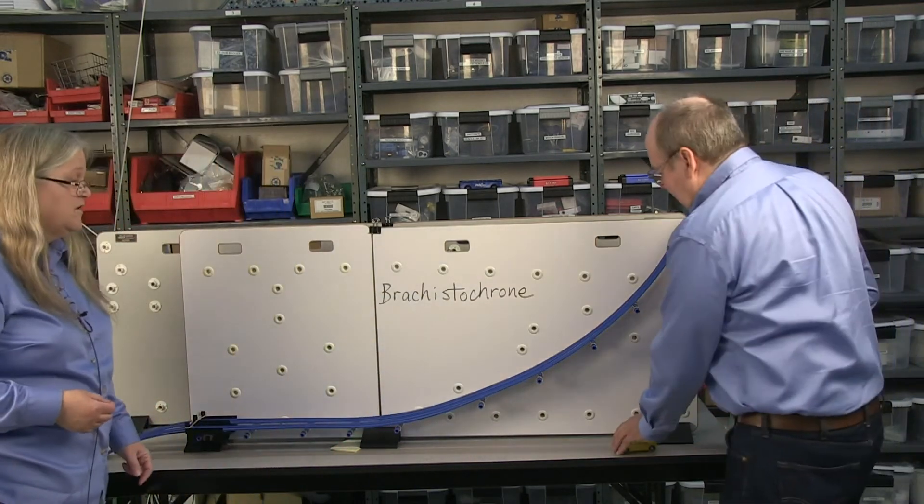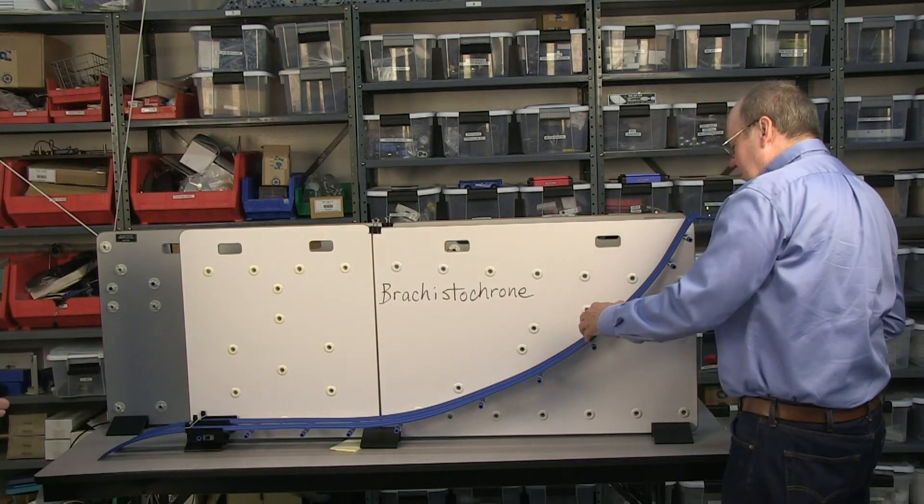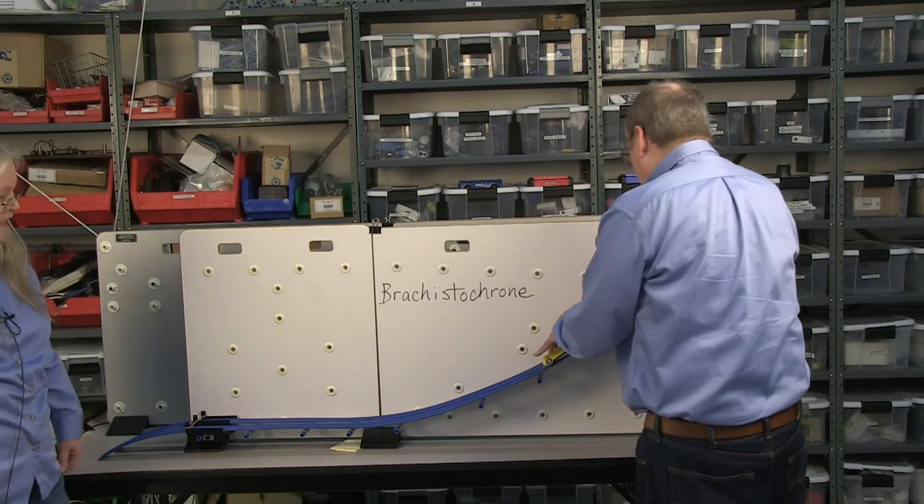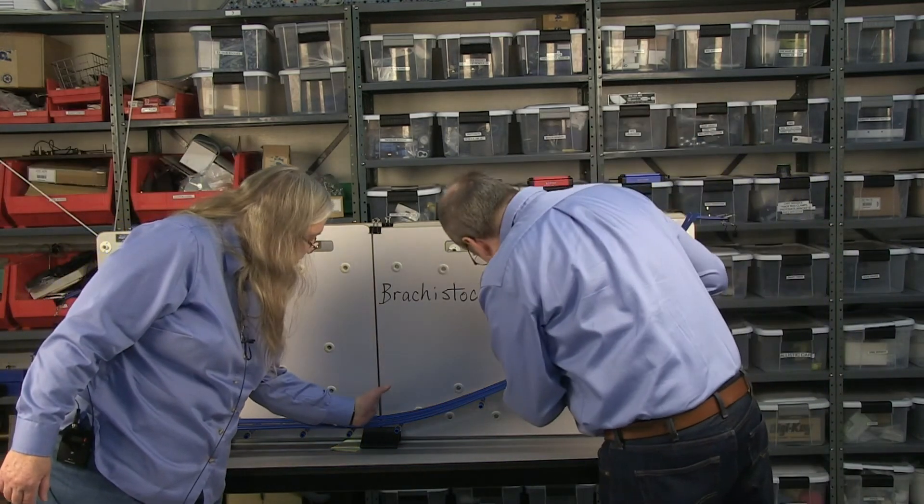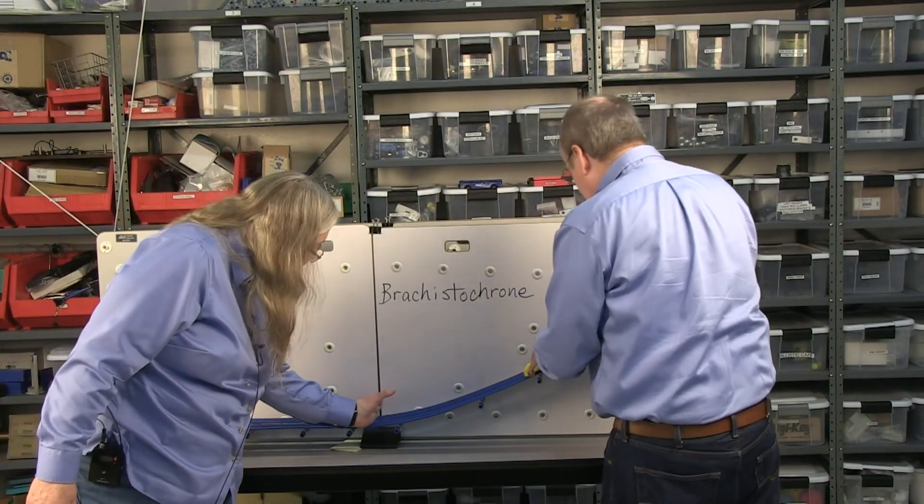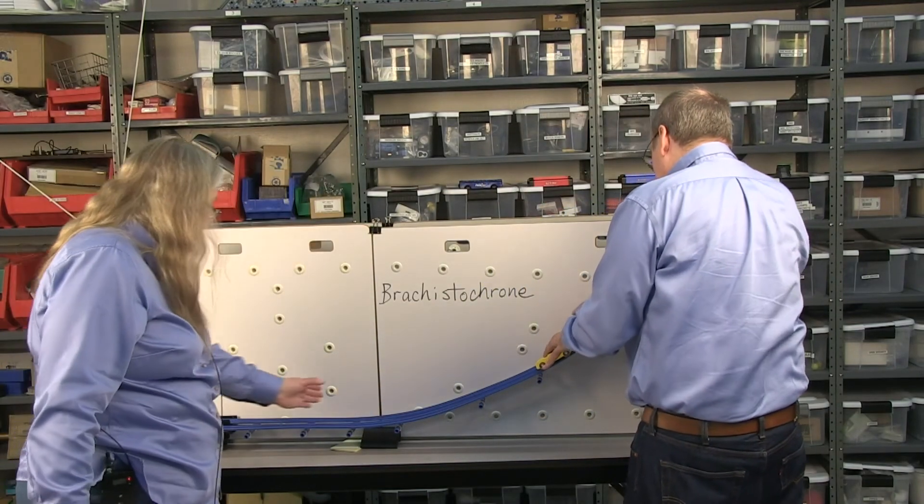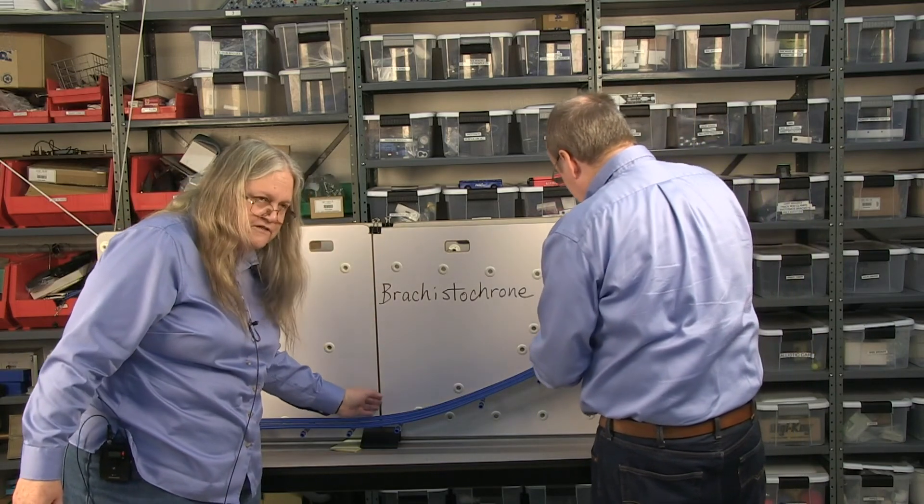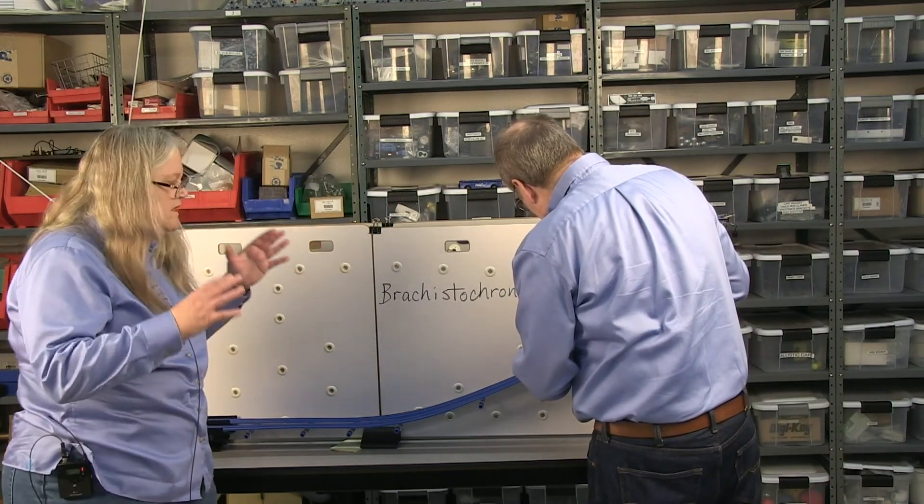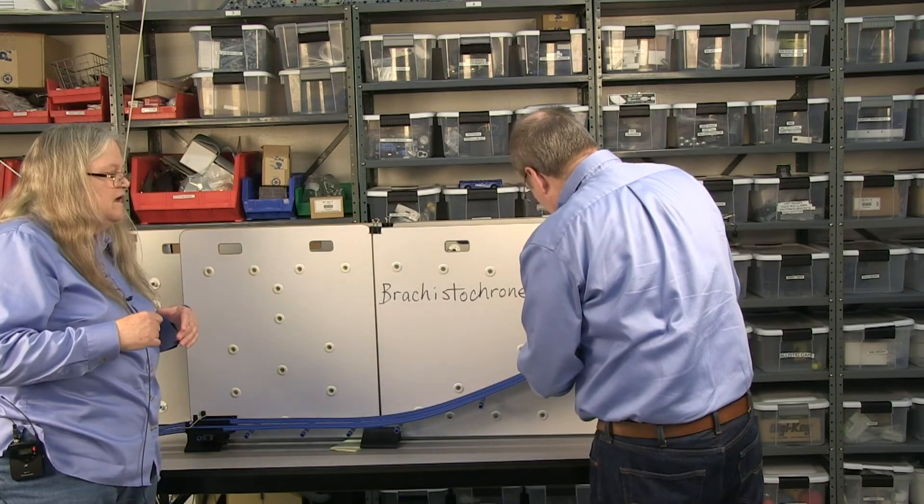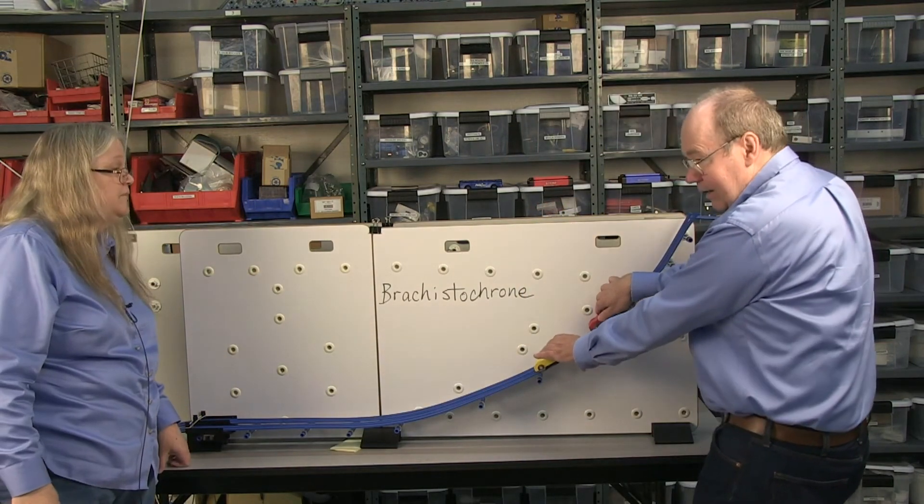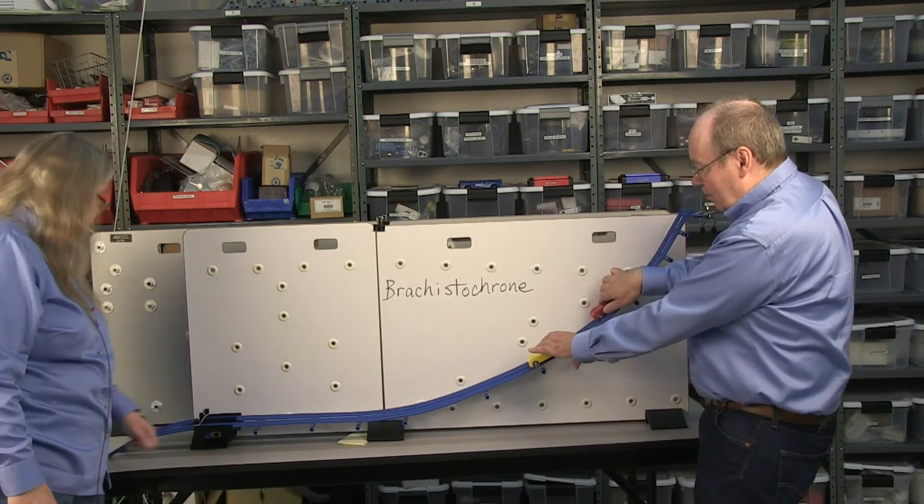So John's going to start the carts out at different heights on this. And the bottom of the brachistochrone is right here. The rest of this is just so we can catch the carts. So about right where the split is in the board here is where the two carts end.